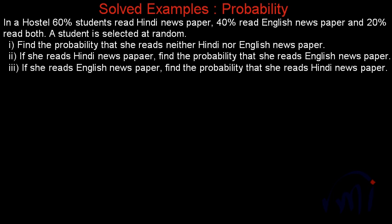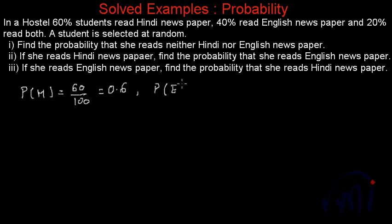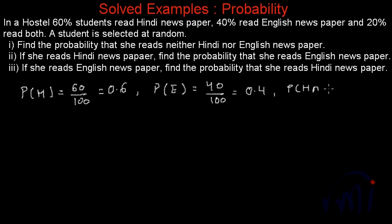If 60% of students read Hindi newspaper, then the probability that a student will read Hindi newspaper is 60 out of 100, that is P(H) = 0.6. The probability of a student reading English newspaper is 40 by 100, that is P(E) = 0.4. And 20% of students read both Hindi and English newspaper, so the probability that a student reads both Hindi and English is P(H∩E) = 0.2.